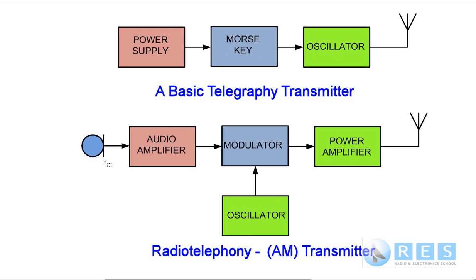A radio telephony transmitter needs a microphone, a microphone amplifier or audio amplifier, and an oscillator to produce the carrier. The audio and the carrier are mixed in the modulator in such a way that the amplitude of the transmitted signal is made to change — that's called AM transmission. The only function of the power amplifier is to lift the power of the output of the modulator to a few watts or 100 watts or whatever we need before we go into the antenna. Those are the block diagrams you need to know for your foundation assessment.